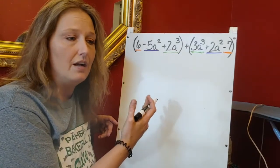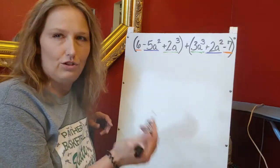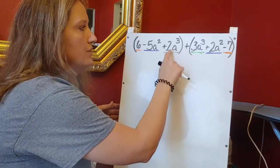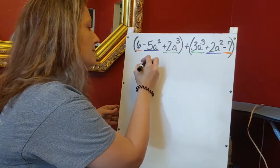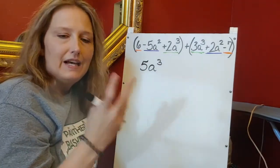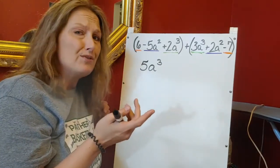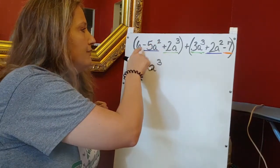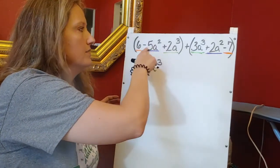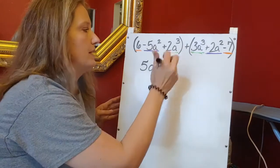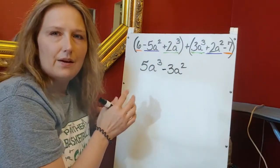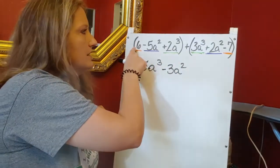I'm going to start with my cubes. I have two a-cubed plus three a-cubed, which gives me five a-cubed. Then I'm going to move to my next lower exponent — my squares. Negative five a-squared plus two a-squared gives me negative three a-squared. And then lastly I'm going to do my constants: six minus seven gives me negative one.